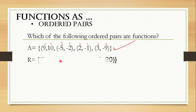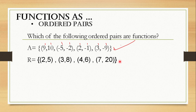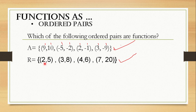Now let's have the second set. The ordered pairs R equals (2, 5), (3, 8), (4, 6), (7, 20). Looking at this given, it is very obvious that each input has exactly one output. Therefore, this is also a function. The value of our domains — 2, 3, 4, and 7 — are not repeating, same goes with our range — 5, 8, 6, and 20. Looking at its relation by pair, this is a 1-to-1 function, meaning each input has exactly one output.